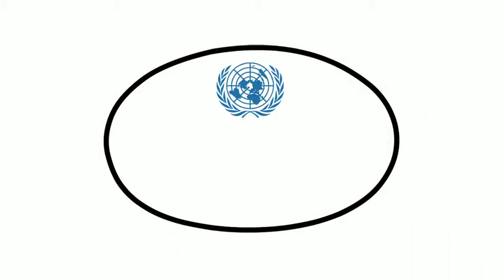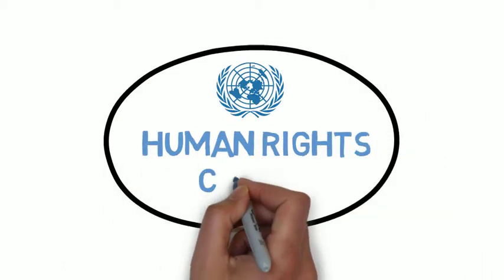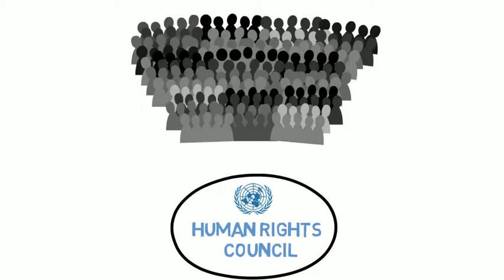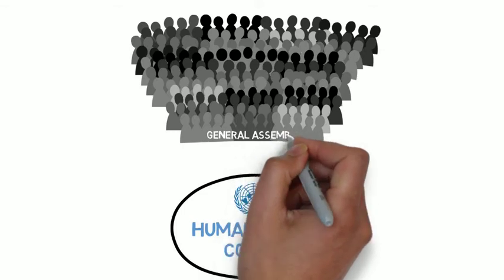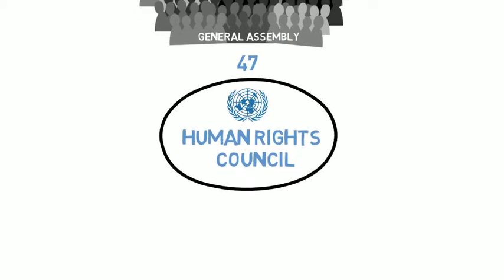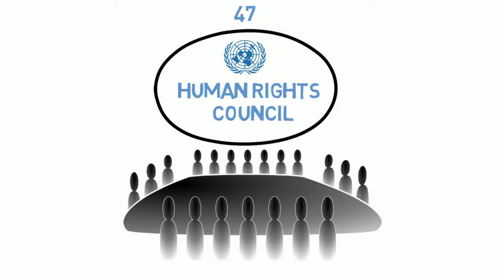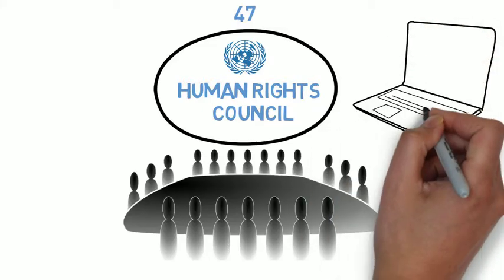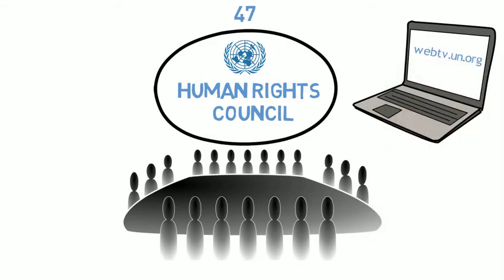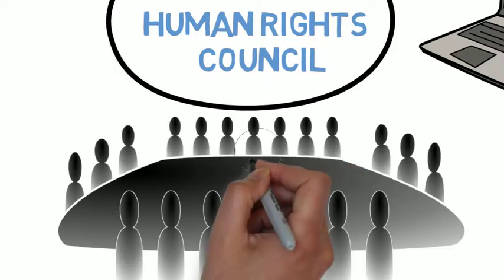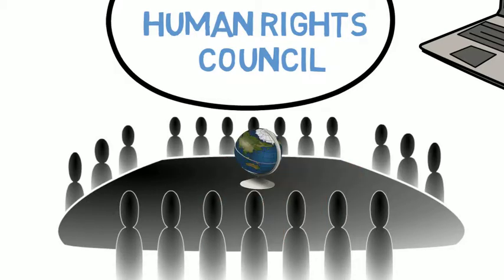The UPR takes place in the United Nations Human Rights Council. The council has been set up by the United Nations General Assembly, which elects 47 countries to sit on the council. The council meets three times a year in Geneva and you can watch the council's sessions via the web on UNTV. The Human Rights Council's task is to strengthen and promote all human rights in all countries and to address human rights violations.